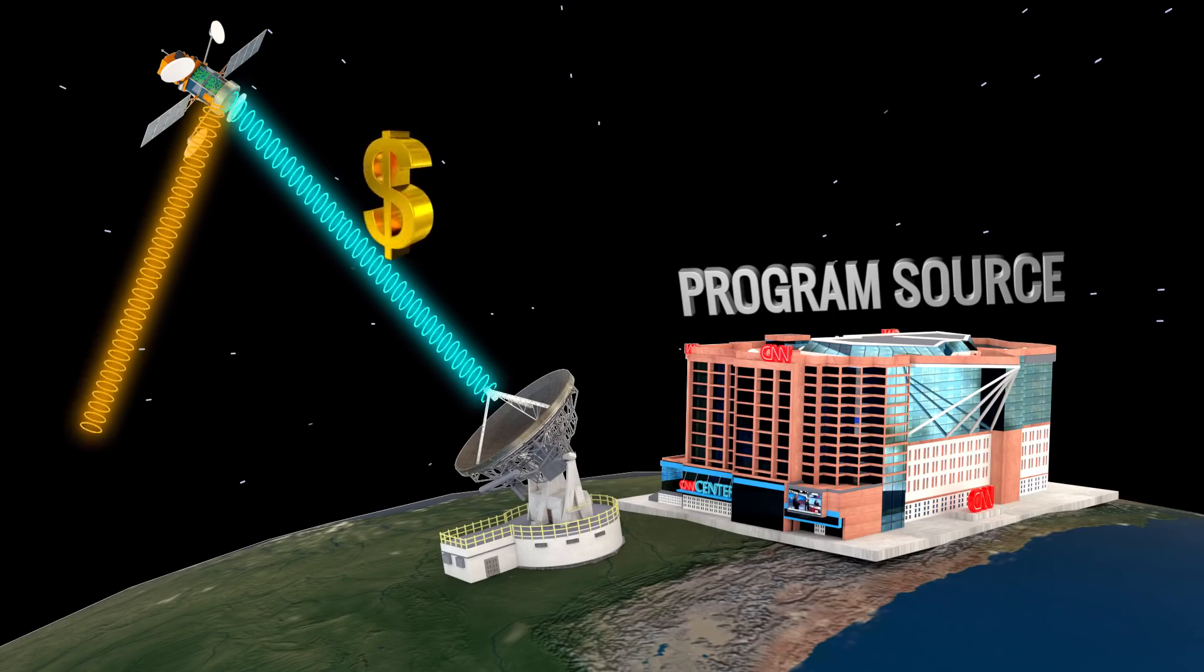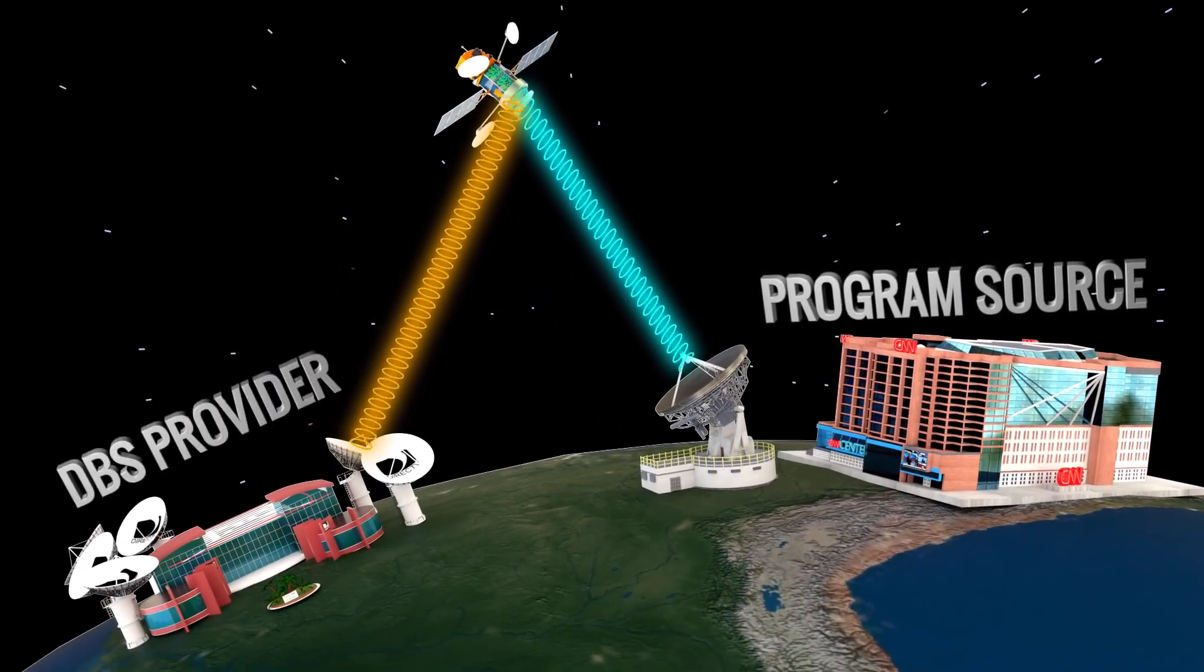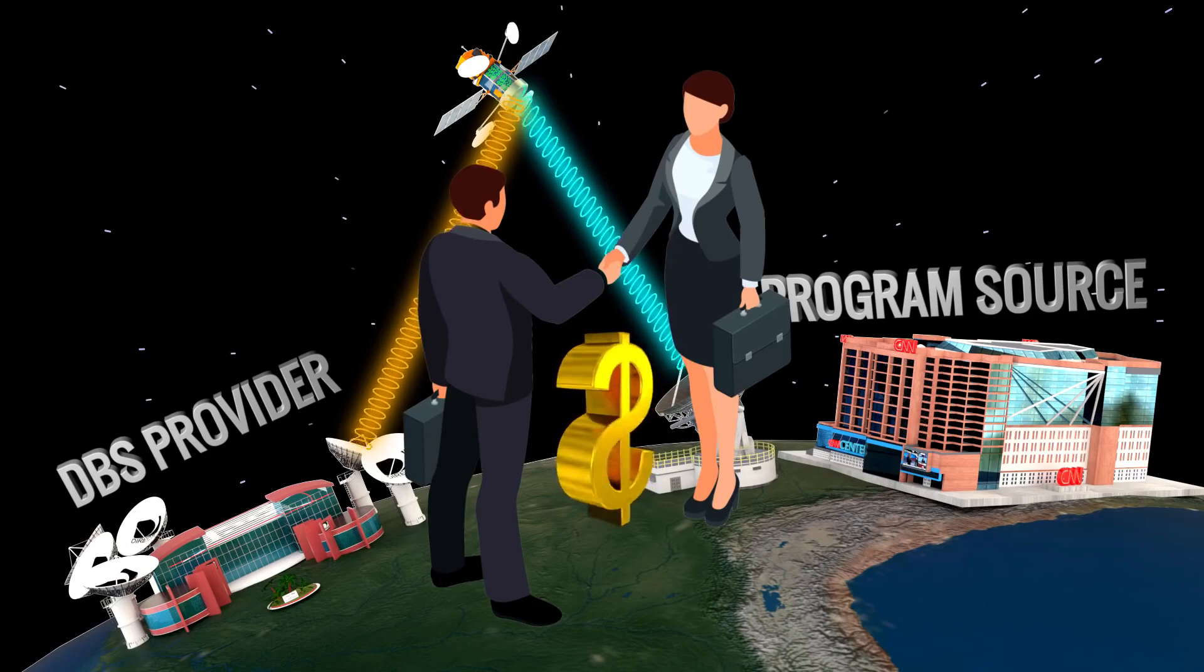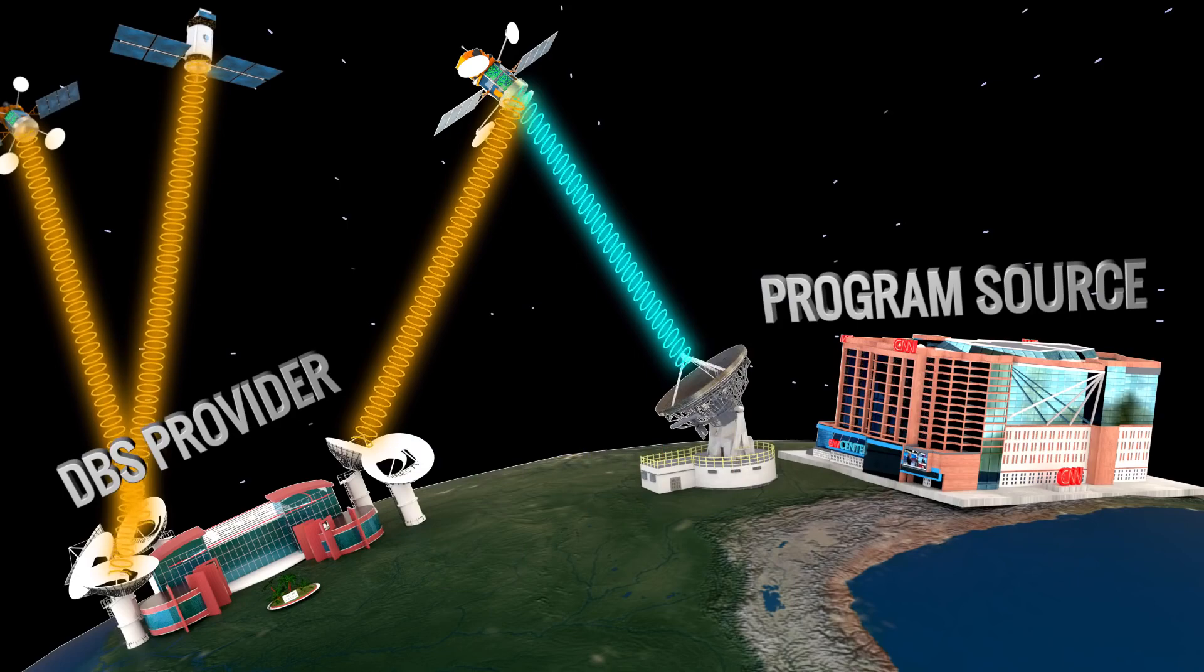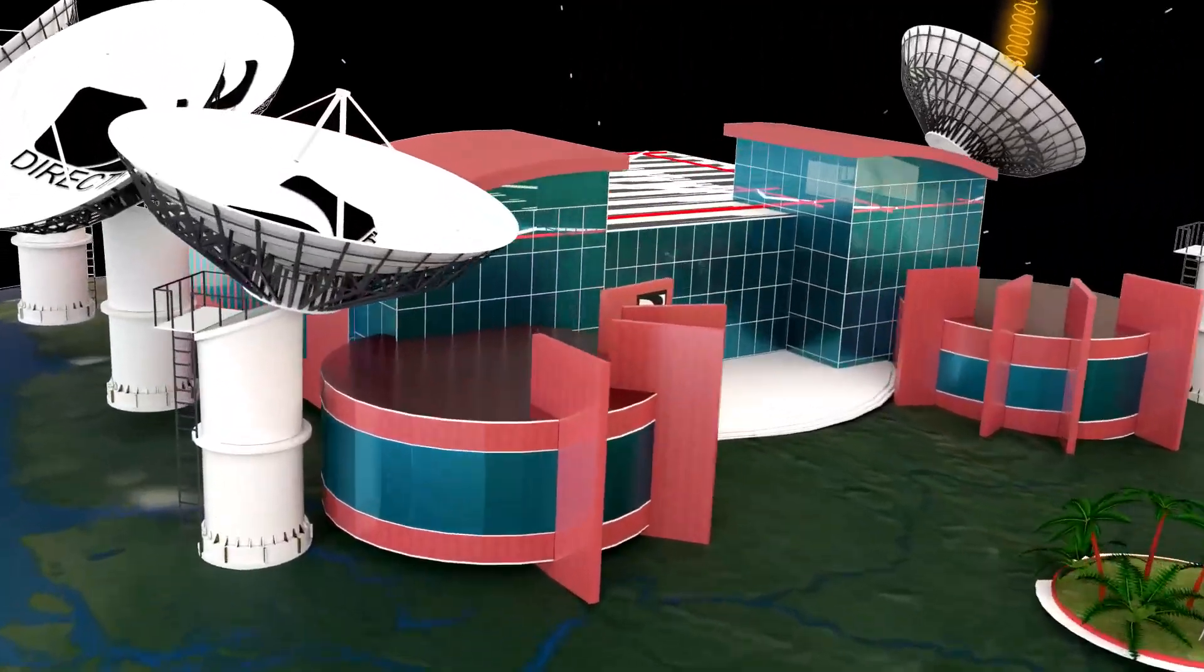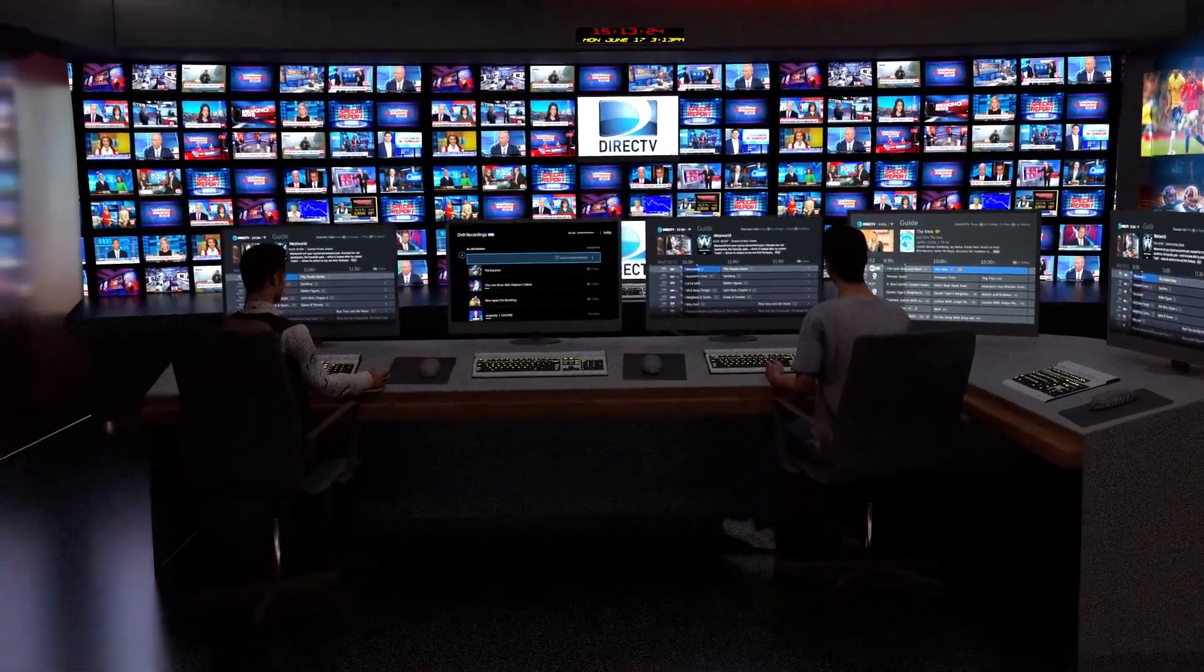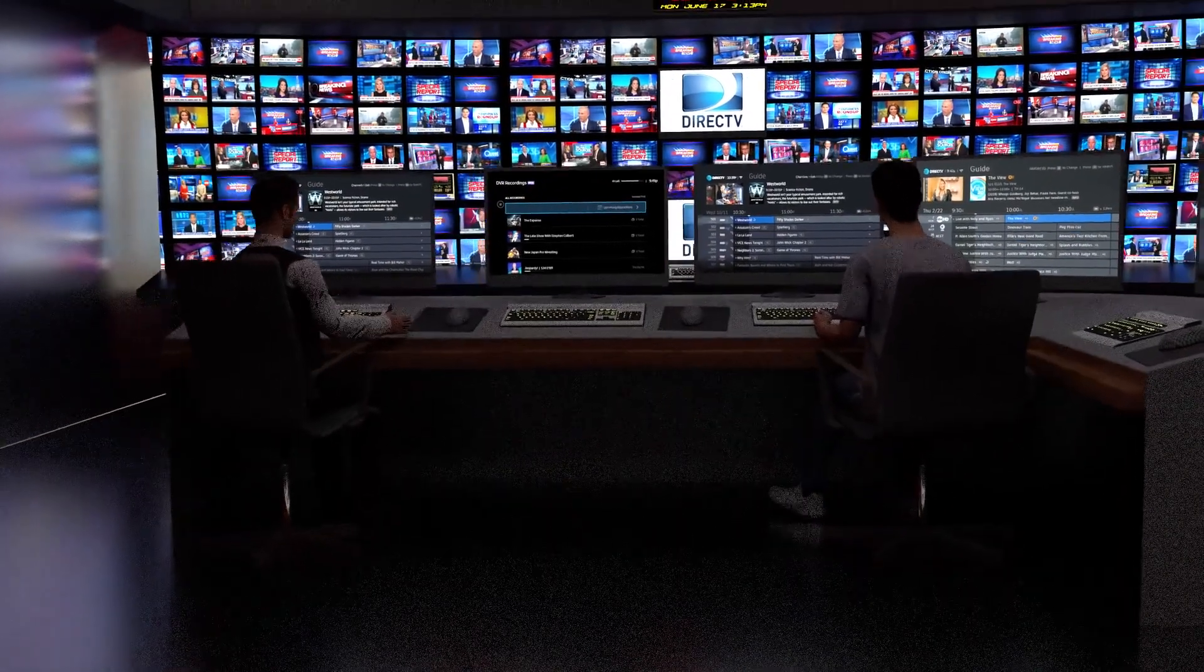Now the CNN signal is commonly available at one point, and any DBS provider can access the signal once they have made a business agreement with the program source. Similarly, the DBS provider collects signals from many such channels or program sources. At their broadcast center, they club all these content together and do video formatting like MPEG compression, standardization of bitrate, and encryption of the signal.